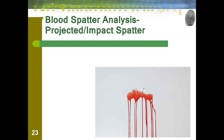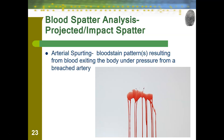Moving on to our projected impact spatters. Up first, we have arterial spurting — a bloodstain pattern that results from blood exiting the body under high pressure from a breached artery. You have some arteries that are pretty accessible, like in your neck and leg. If they become breached, the pressure causes blood to exit the body very quickly, resulting in a large volume of blood hitting a surface at one time. You can see in this picture the arterial spurt is starting to get that flow pattern because this is a wall — a lot of times, blood patterns can coexist.